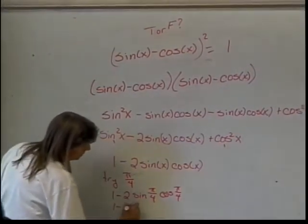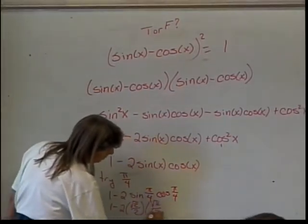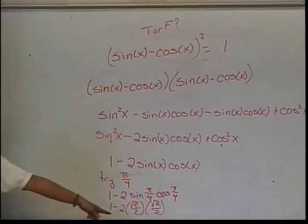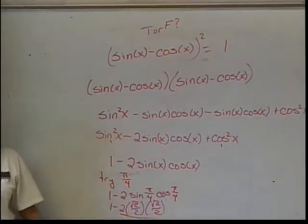Well, that's 1 minus 2 times the square root of 2 over 2 times the square root of 2 over 2. There's no way that this thing is going to be 0. There's no 0 in there.